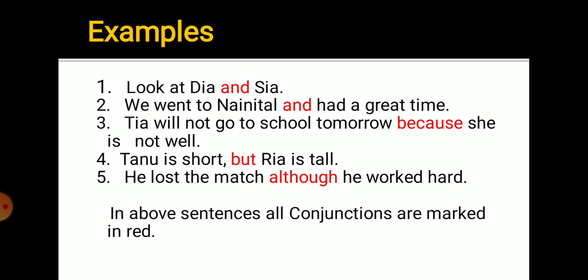Now coming to some examples. Look at Diya and Sia. We went to Nainital and had a great time. Tina will not go to school tomorrow because she is not well. Tanu is short but Ria is tall. He lost the match although he worked hard. All the words written in red are conjunctions. In the first sentence, rather than repeating the words 'look at,' we used conjunction: Look at Diya and Sia.